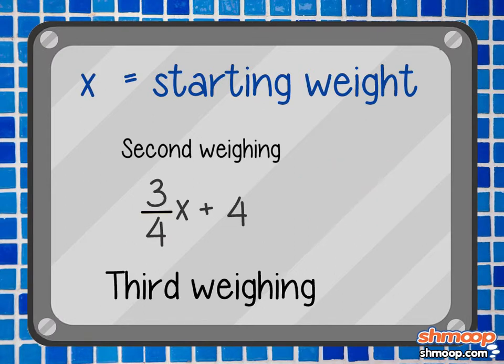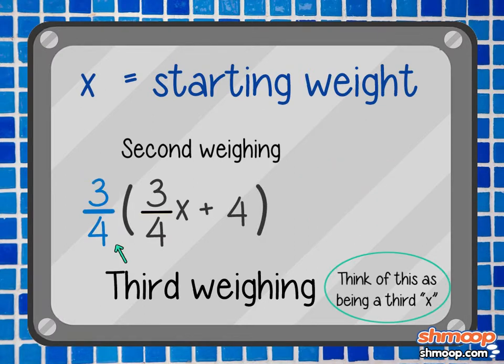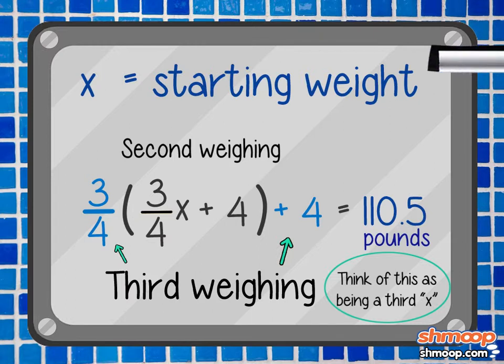And at the third weighing, it would be three-fourths times three-fourths x plus four plus four. The problem tells us that all that jumbled mess must come out to 110.5, so it's simply a matter of working out the math.